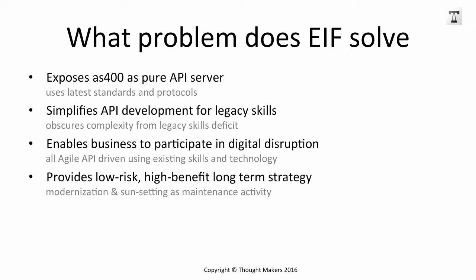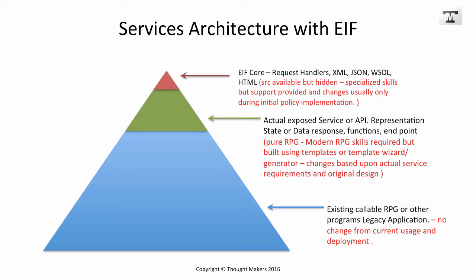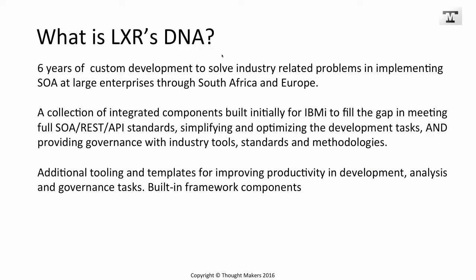We can end up modernizing the entire system by forward engineering APIs and microservices to ultimately replace the system. The deliberate architecture of Lexer is that the complicated elements — available as source code in certain versions of the product — are a small footprint that the developer never needs to have access to. The actual exposed service is a light footprint with embedded components that do all the complicated work, enabling developers to integrate any existing code or legacy skills with this very simple architecture. Lexer was originally developed as a series of components for various clients that needed to achieve digital integration around the globe — insurance companies, banks, switching companies.